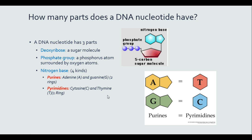The nitrogen bases are broken down into four different kinds: adenine, guanine, cytosine, and thymine. But we can have subgroups called purines and pyrimidines. Purines consist of adenine and guanine — these are two-ringed nucleotides as we can see down here. The pyrimidines are cytosine and thymine, which are just one ring.